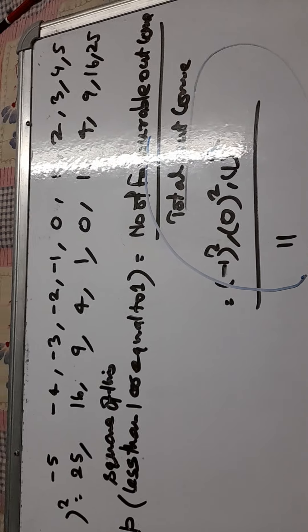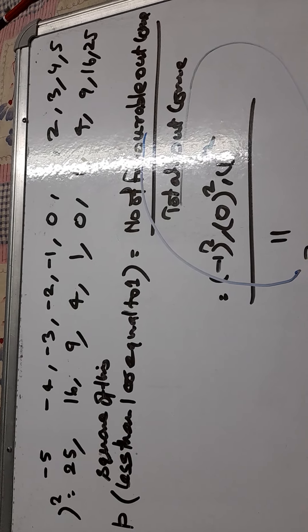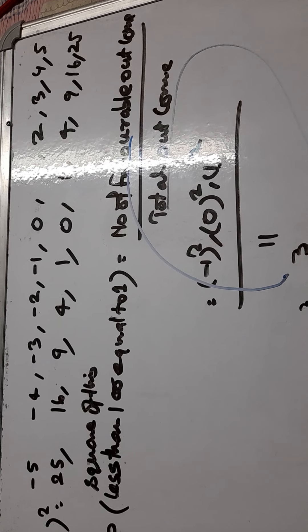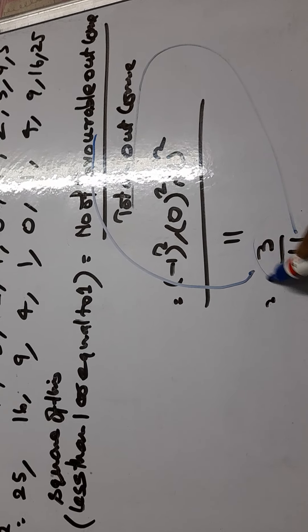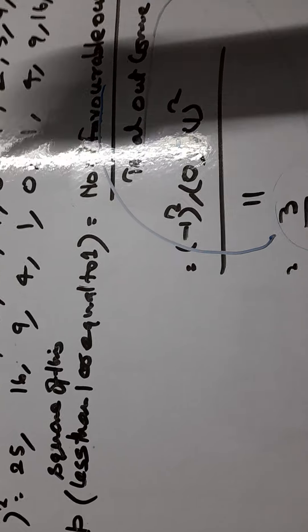So the probability that the square of this is less than 1 or equal to 1 is 3 by 11 and this is the answer.